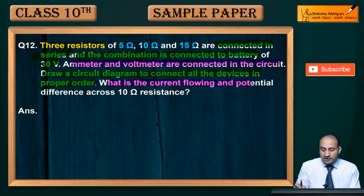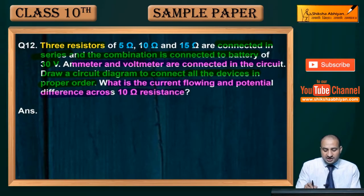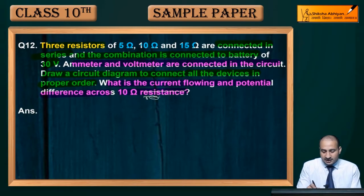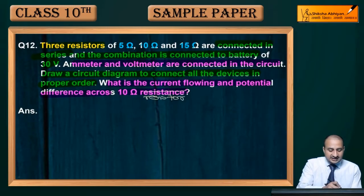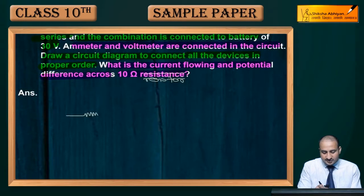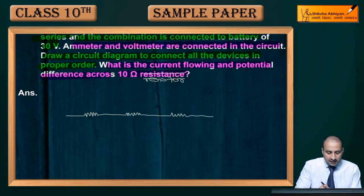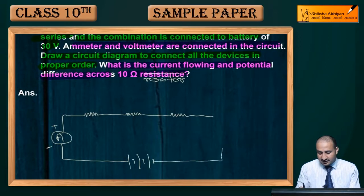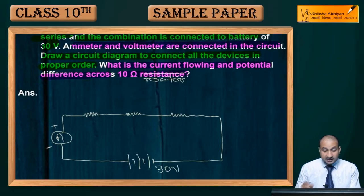What is the current flowing and the potential difference across 10 ohm resistance? So these resistors should be connected in series connection. Current is the same. Then the potential difference which we have provided with battery, that is 30V.